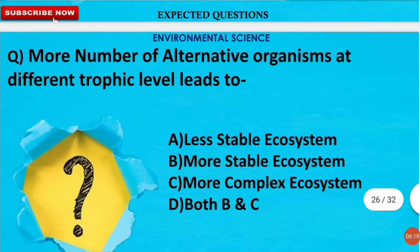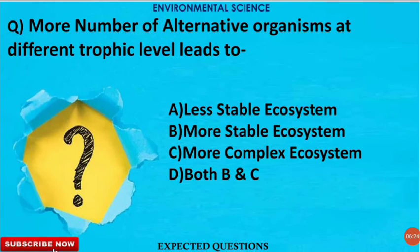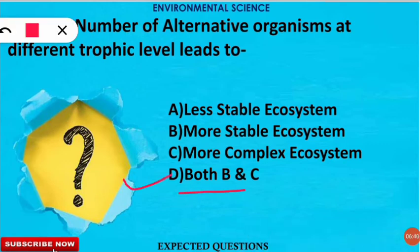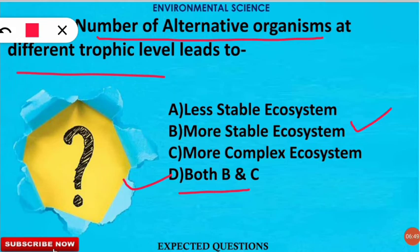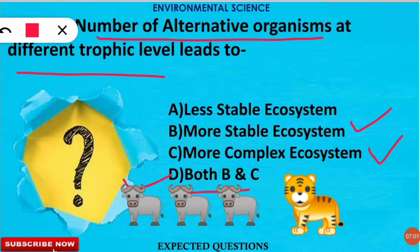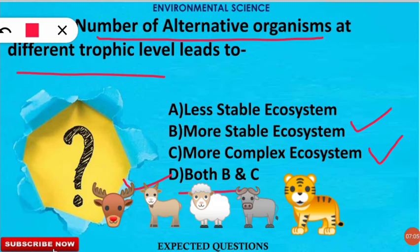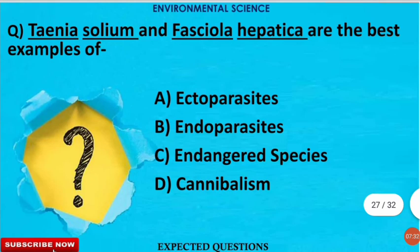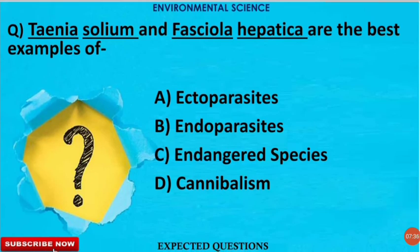The next question is: more numbers of alternative organisms at different trophic levels leads to what? The correct option is D — both B and C. Having more alternative organisms at different trophic levels leads to a more stable ecosystem as well as a more complex ecosystem. For example, if a carnivore like a tiger relies on only one herbivore like cattle, the ecosystem is less stable. But if the carnivore has more options such as deer or other herbivores, the ecosystem is more stable.